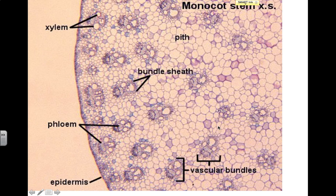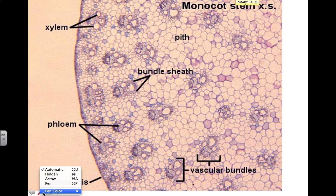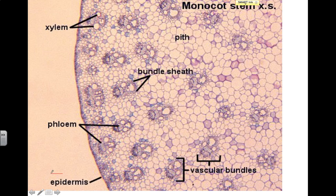Now we move into stems, and we'll talk briefly about stems as well. Stems, remember, are going to hold the leaves up to sunlight, and they're going to have a different structure than the roots. If we point out some of the major portions of it, epidermis is just going to be the outer protective layer for the stem. Then you're going to have what's called pith.